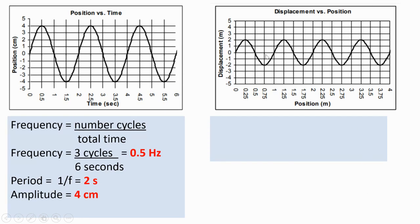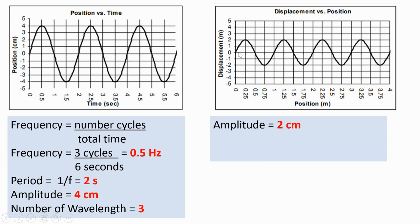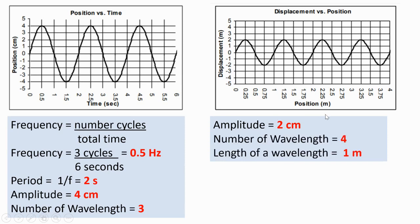For the second problem, we cannot determine frequency or period because the horizontal line shows position, not time. But we can determine the wavelength. One wavelength is one meter. The amplitude is the distance from the equilibrium line to the crest or trough — that will be two centimeters. There are four complete wavelengths shown: from 0 to 1, 1 to 2, 2 to 3, and 3 to 4 — each one meter in length.